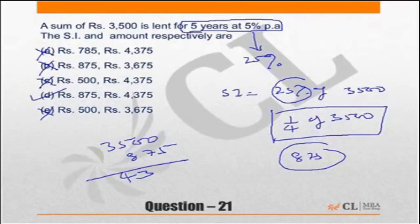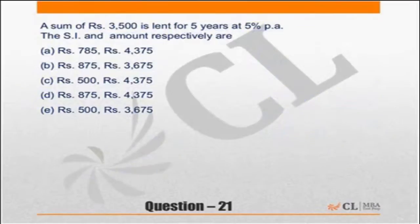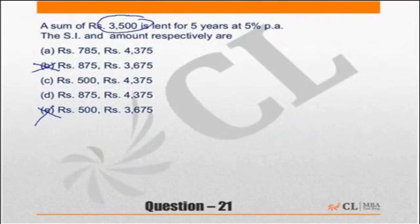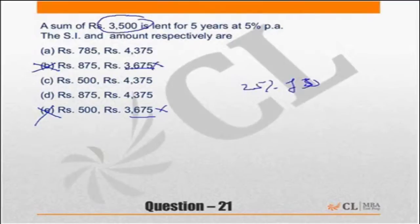Actually we should have noticed this earlier — that when the principal is 3500, in 5 years it cannot become 3675. We should have noticed it and straight away eliminated choices B and C, because those two choices are not valid. Why? Because at 5 years and 5%, the interest on 3500 will be more than 175. And then out of the remaining, we could have found the simple interest which is 25% of 3500, and that would have given the answer.